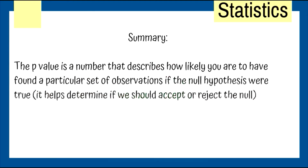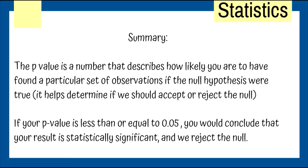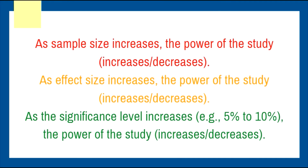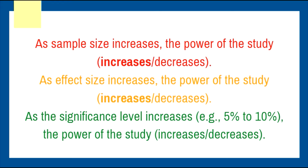If p is less than or equal to 0.05, reject the null. As sample size increases, the power of the study increases. As effect size increases, power increases. As the significance level increases, power also increases.